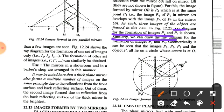Similarly, we can draw the ray diagram for the formation of images P1 and P4. Geometrically, it can be seen that the images P1, P2, P3 and the object P all lie on a circle whose center is O.